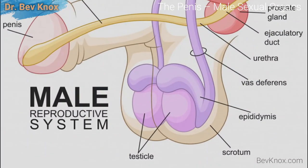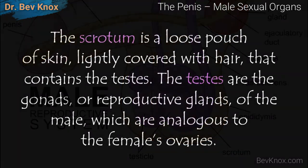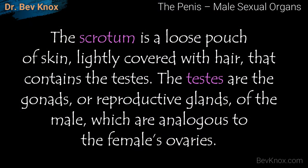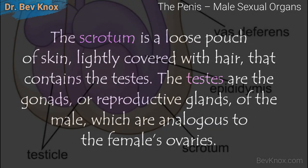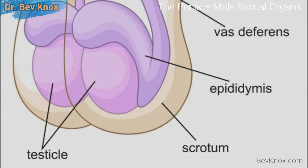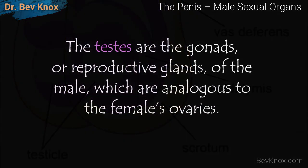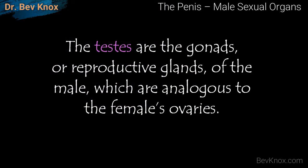The other major external genital structure in males is the scrotum. This is a loose pouch of skin lightly covered with hair that contains the testes, or what people colloquially call the balls or nuts. The testes themselves are considered part of the internal genitals. The testes are the gonads, or reproductive glands, of the male — analogous to the ovaries in the female.